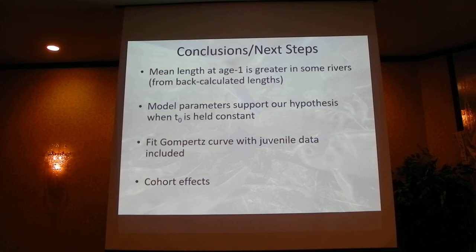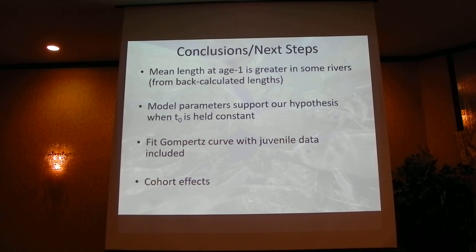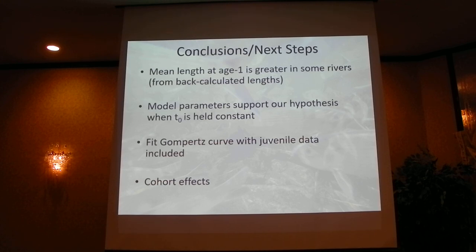Across every back-calculation scenario I ran, the Back River, Parker, and Memasket consistently came out on top for back-calculated length at age one — meaning by age one this disparity in size is already present. That, combined with model parameter support when t0 is held constant, lends support to our hypothesis that growth near age zero is greater in some of these systems. Moving forward, we're working on fitting a downward-style curve to bring juvenile data back in to constrain the model to a more meaningful intercept near age zero, and initial runs look promising. We'll also examine cohort effects to assess whether any individual age class is having an undue impact on any of these systems.